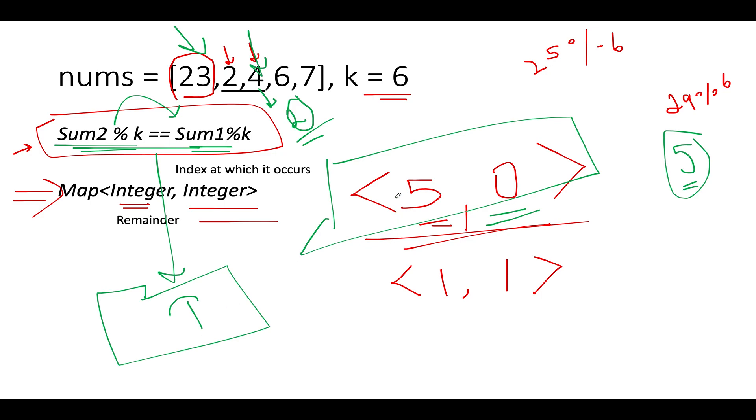However, while iterating through the entire array in case there was no repetition of remainder then we would have stated the result as false. To conclude it further let us quickly walk through the coding section.